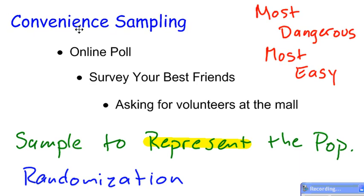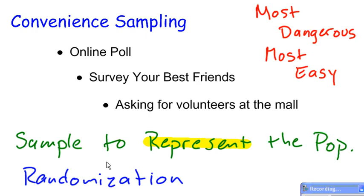Convenience sampling doesn't randomize things. Online polls don't randomize anything. Surveying your best friends doesn't randomize anything. Asking for volunteers at the mall isn't a good way to randomize your sample. So that's why convenience sampling is the most dangerous — it might be the easiest, but it's also very dangerous. We randomize things in simple random sampling, stratified sampling, cluster sampling, and even to a certain extent in systematic sampling, so that our sample can represent the population.